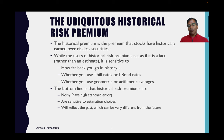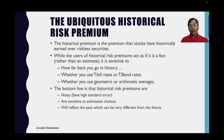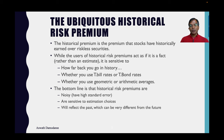It's to combat all of these limitations of the historical risk premium that I started computing what I call an implied equity risk premium about 30 years ago. I drew on the bond market. Think of how we compute the yield to maturity on a bond — we take the price of the bond, the coupons and face value, and solve for that discount rate that makes the present value of the cash flows equal to the price of the bond. It's an internal rate of return for the bond. If I could do that for stocks, I could get a forward-looking equity risk premium.